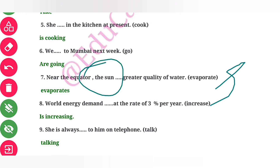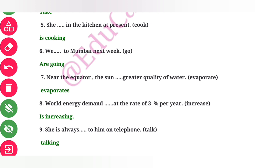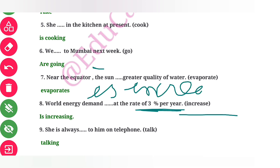Question 8: World energy demand is increasing at the rate of 3% per year. The verb is 'increase'. Since this is a continuous ongoing process, we use the present continuous form — 'is increasing'.